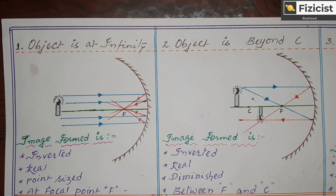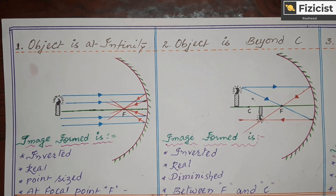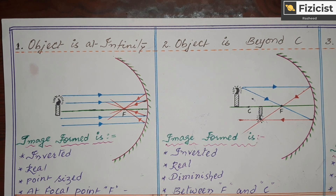In this video we will see how images are formed in a concave mirror with the help of ray diagrams. We will see all the possible situations — all the possible places where we can place the object in front of the concave mirror.